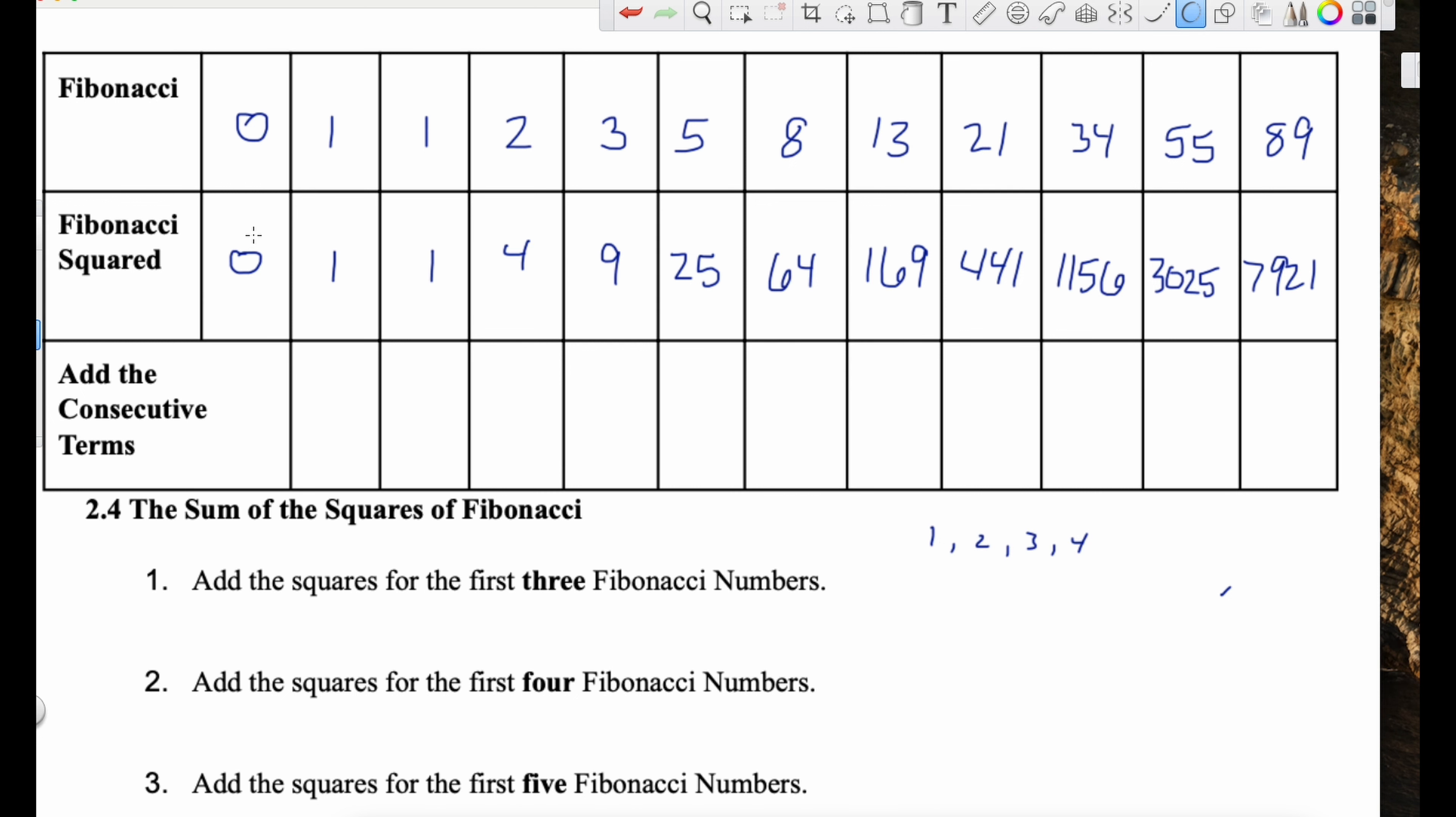So 21, we've got 441. 34 squared is 1156. 55 squared is 3025.